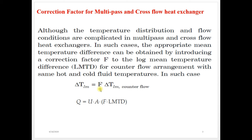For the heat transfer analysis of cross flow and shell and tube heat exchangers, this correction factor is required. In order to find out mean temperature difference for cross flow and shell and tube heat exchangers, first we have to find out LMTD considering counter flow heat exchanger, then we have to multiply correction factor F to the LMTD temperature we have calculated. Then we will get final mean temperature difference delta TLM.